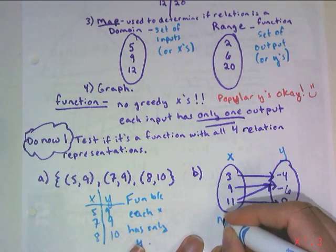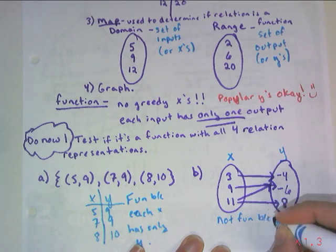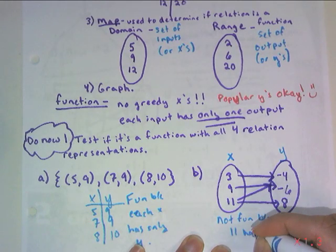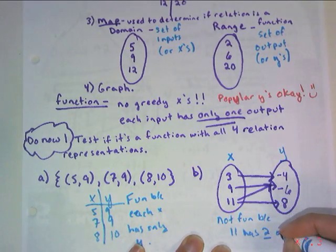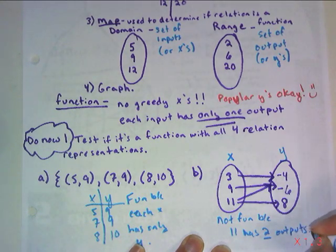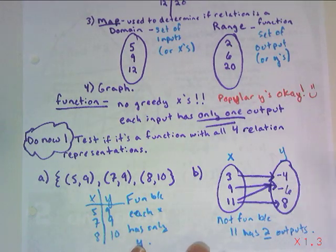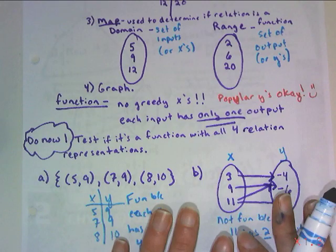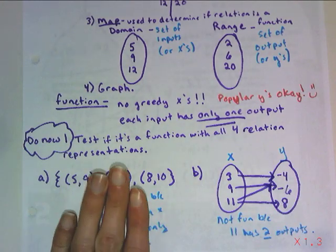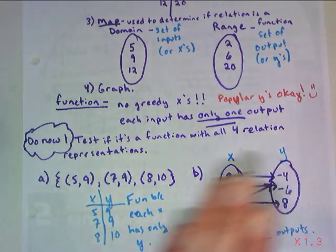So this is not fun, he is ruining all of our fun, because 11 has two outputs, and the outputs are negative 6 and 8. So this is looking at a set of ordered pairs, this one's looking at a map.